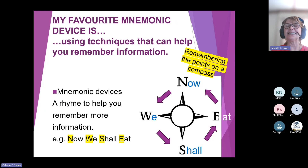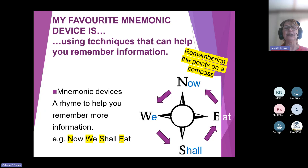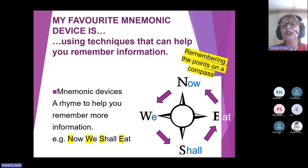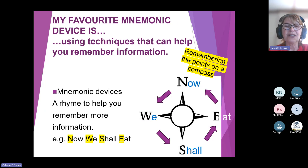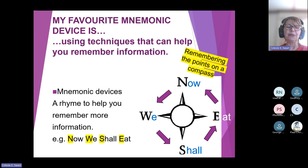I want us to look at our other way of summarizing — mnemonic devices. It's a technique we use when we want to summarize something to make sure we remember the facts. So if you want to remember the points on a compass — north, west, east and south — you might get confused. When I was in primary school, our teacher taught us 'Now We Shall Eat', and you went around the compass doing that. It's a rhyme to help you remember more information. That's what a mnemonic device is.